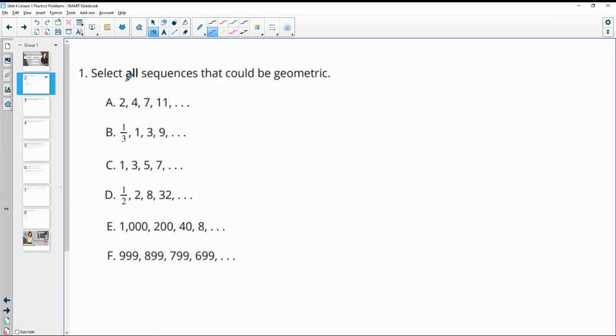Number one asks us to select all sequences that could be geometric. So remember, geometric means that you're multiplying by a common ratio here to get each of the terms.